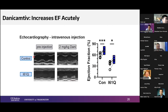Reviewers requested more in vivo data, collected in the last few weeks. We administered Danicamptiv via tail vein intravenous injection at two milligrams per kilogram in control and I61Q mice under sedation, then measured ejection fraction ten minutes later. We observed an increase in ejection fraction in both control and I61Q groups, with an average of approximately 27% increase in both.